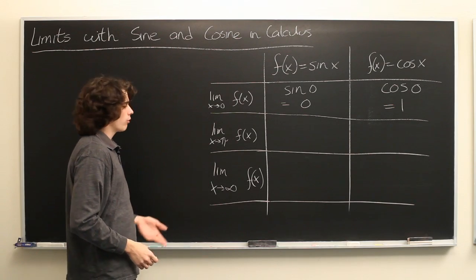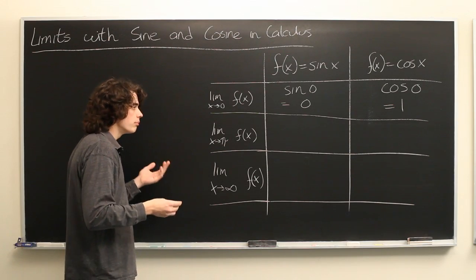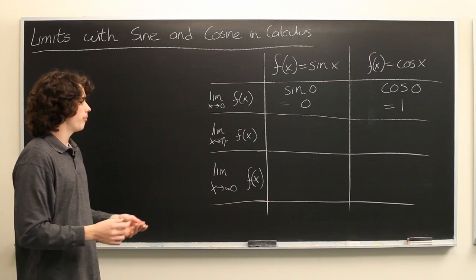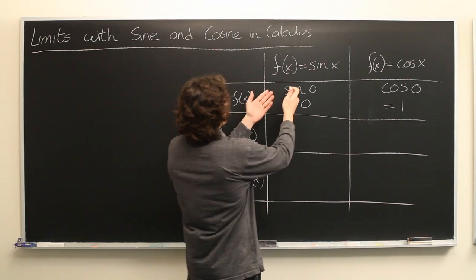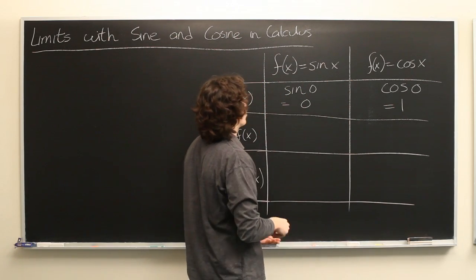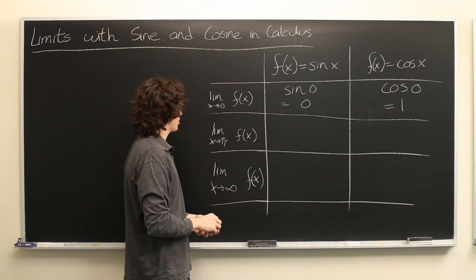And the same is going to be true for the limit as x approaches pi. This value is no different than any other. There's no reason to suspect that either of these functions will be poorly behaved at x equals pi.